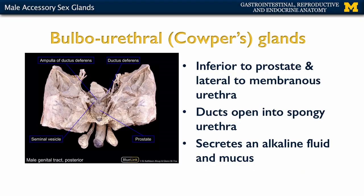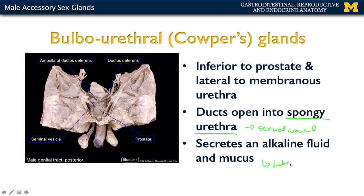The smallest of these accessory sex glands are the bulbourethral glands. These are paired glands that are inferior to the prostate and lateral to the membranous urethra — they're not really visible in this particular image. They drain into the spongy urethra and secrete fluid in response to sexual arousal. The sensory innervation leads to the secretion of an alkaline fluid and mucus that serves a lubricant function.